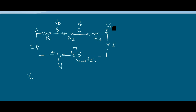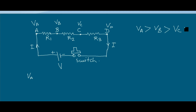The potentials at these points are going on decreasing because of the voltage drop across each resistor. VA is at maximum potential, and VA is greater than VB, and VB is greater than VC. The potential drops occur because of the voltage drops across resistors R1, R2, and R3.